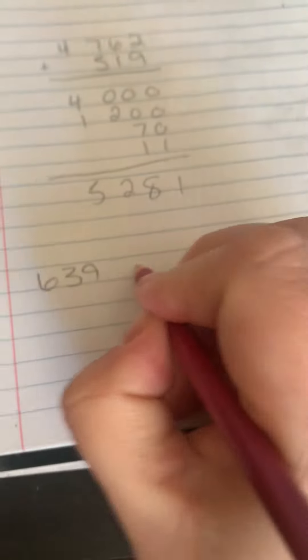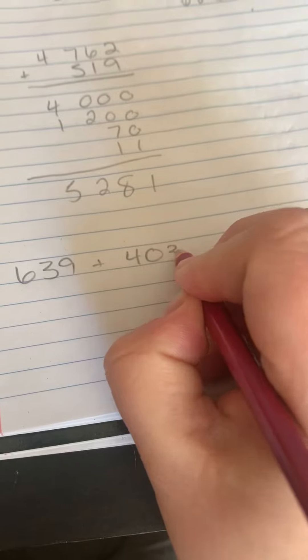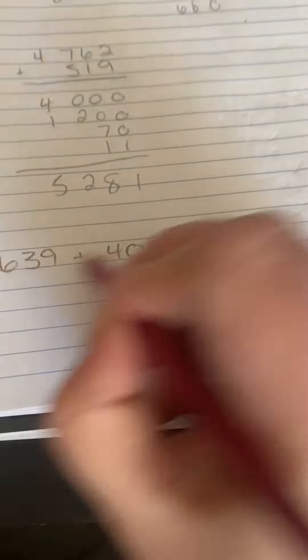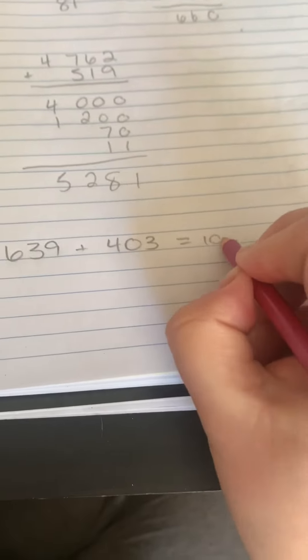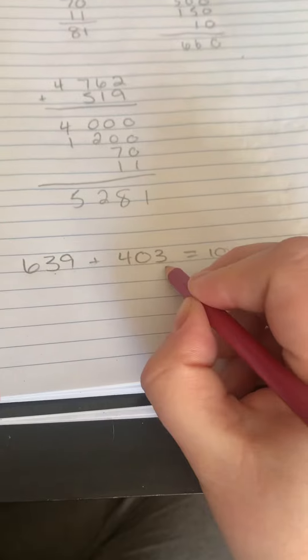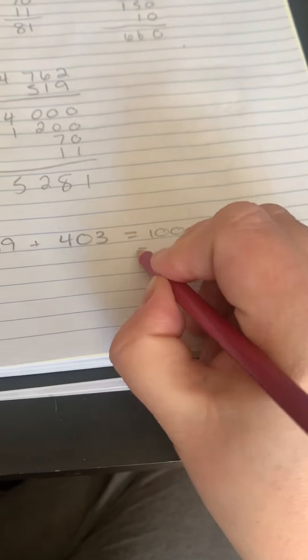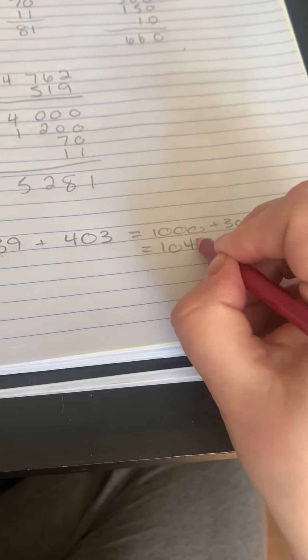So if I have, I could do 600 and 400 to get 1,000, 30 and 0 to get 30, and 9 and 3 to get 12, and I would come up with a total answer of 1,042.